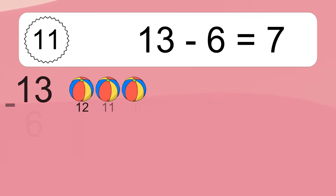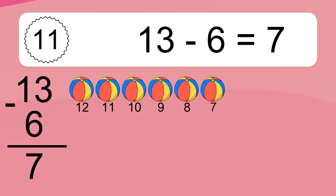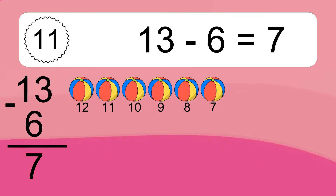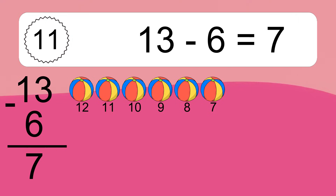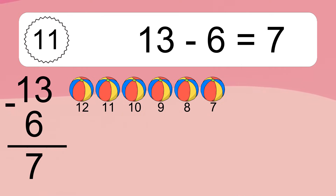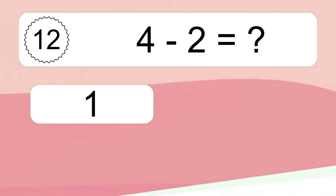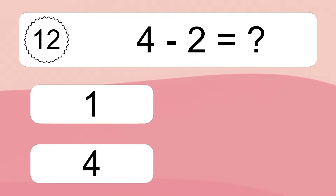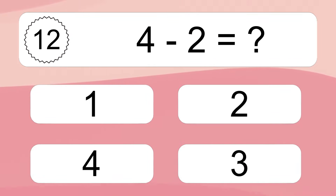13 minus 6 equals what? 13 minus 6 equals 7. Let's count it: 12, 11, 10, 9, 8, 7.